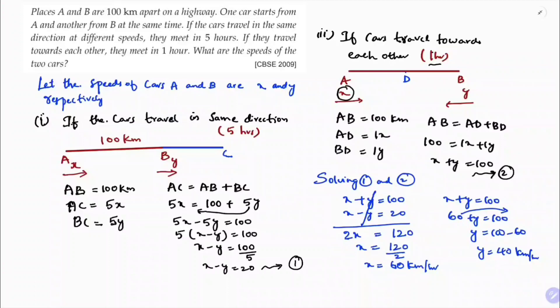So this is how we simplify the speeds of the two cars. Car A travels at 60 km/h and car B travels at 40 km/h.